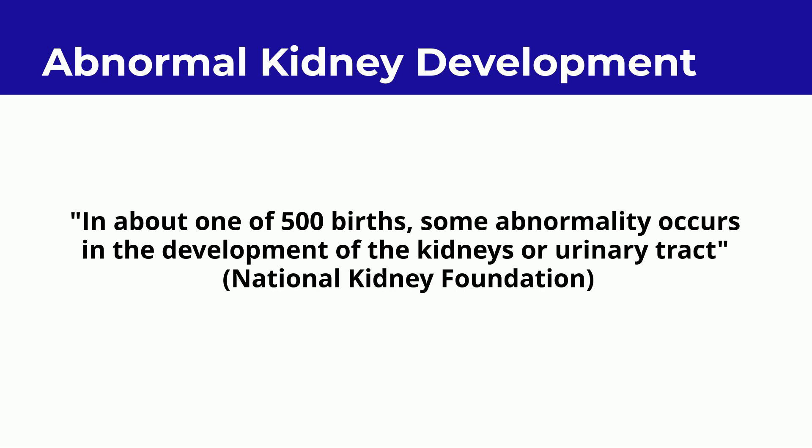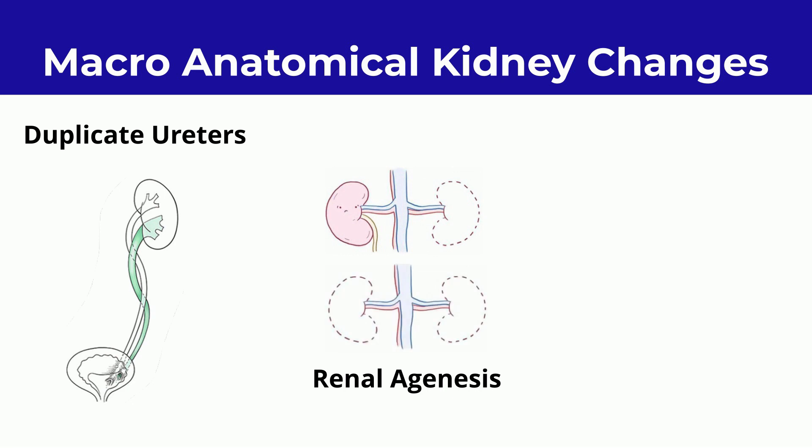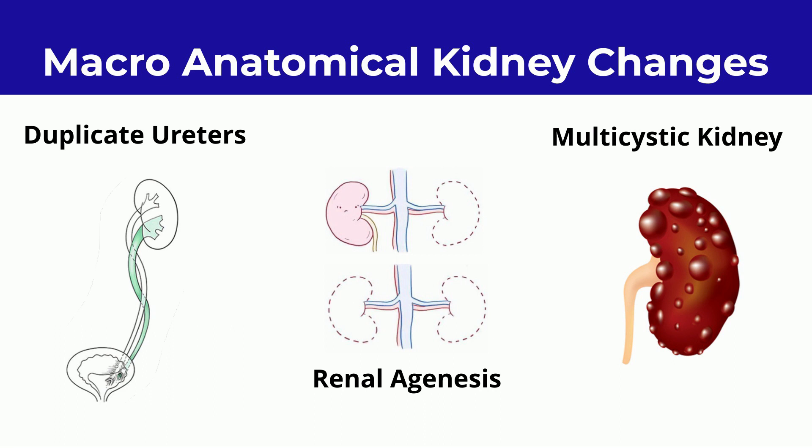Structural changes of the kidney can be broken down into macro and microanatomical changes. Some examples of macroanatomical changes include duplicated ureters, where instead of one tube draining the kidney to the bladder there are now two; renal agenesis, where you are born with only one functional kidney or zero; and multicystic kidney, where multiple cysts form on the kidney due to nephrons filling with urine. Macro changes can be spotted at birth with ultrasound, and doctors can treat these abnormalities if caught early. Babies with urinary tract abnormalities detected by prenatal ultrasound often do very well.